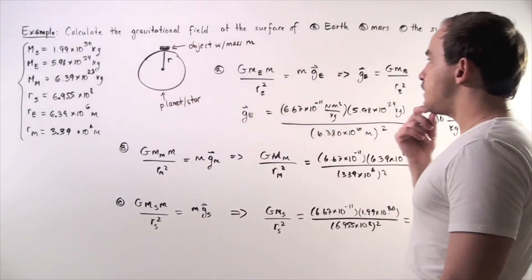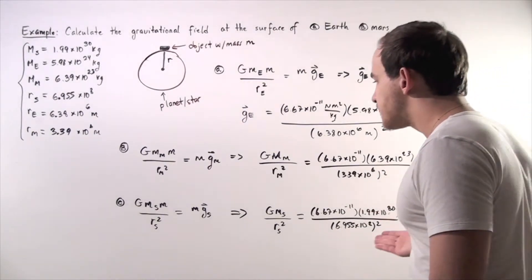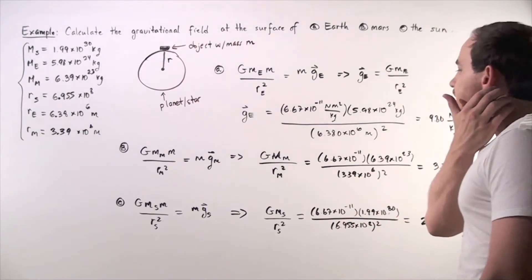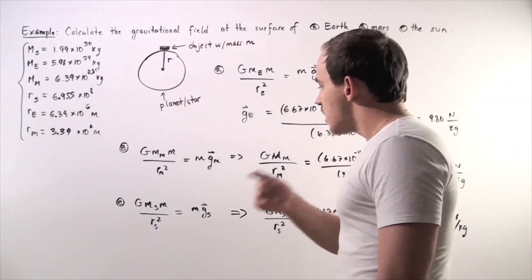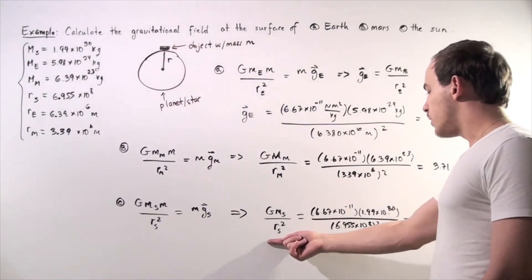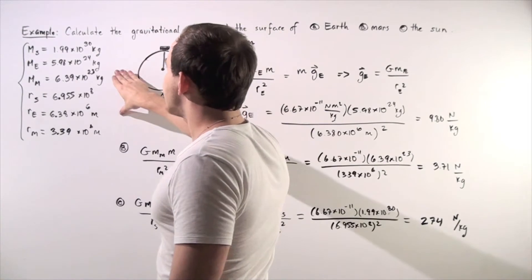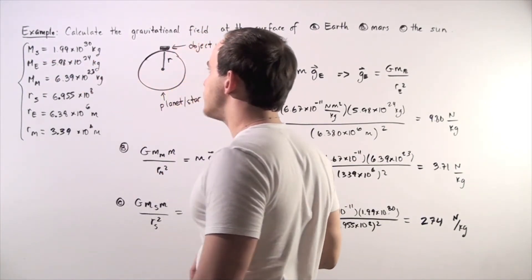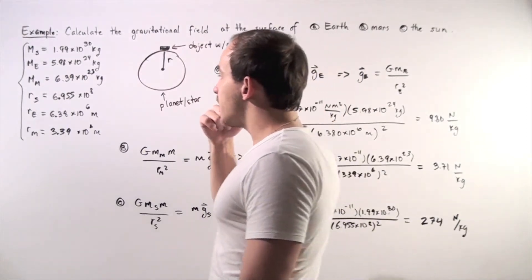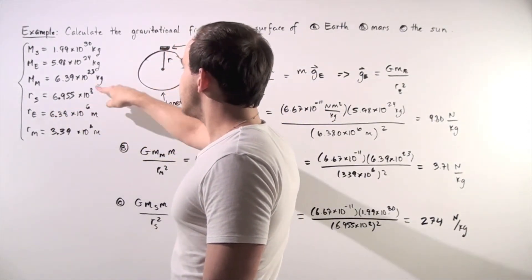For part C, let's find the gravitational field on the Sun. The same steps apply, except we replace the mass and radius with those of the Sun. The mass of the test object cancels again, giving us the same formula. We plug in our values: the mass of the Sun is 1.99 × 10³⁰ kg, and the radius of the Sun is 6.955 × 10⁸ meters.